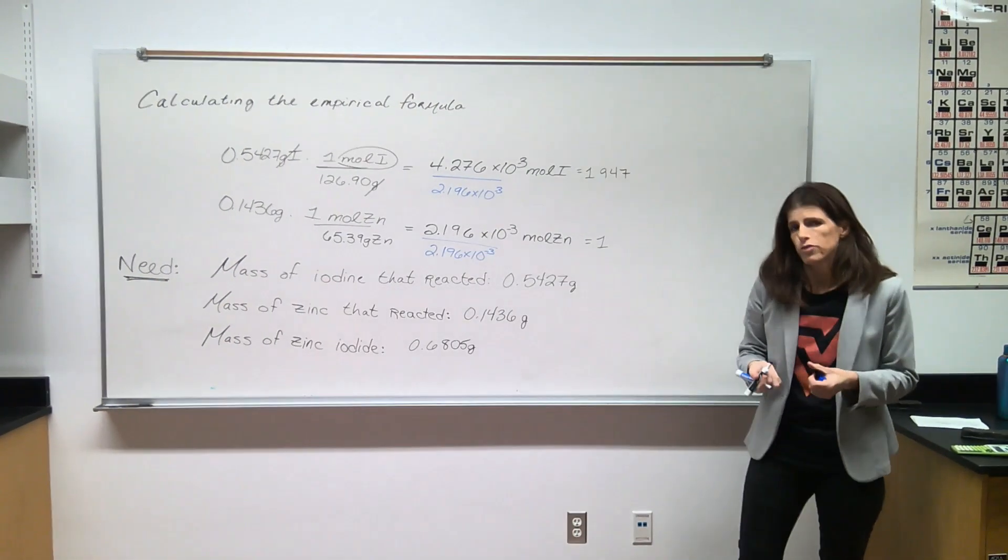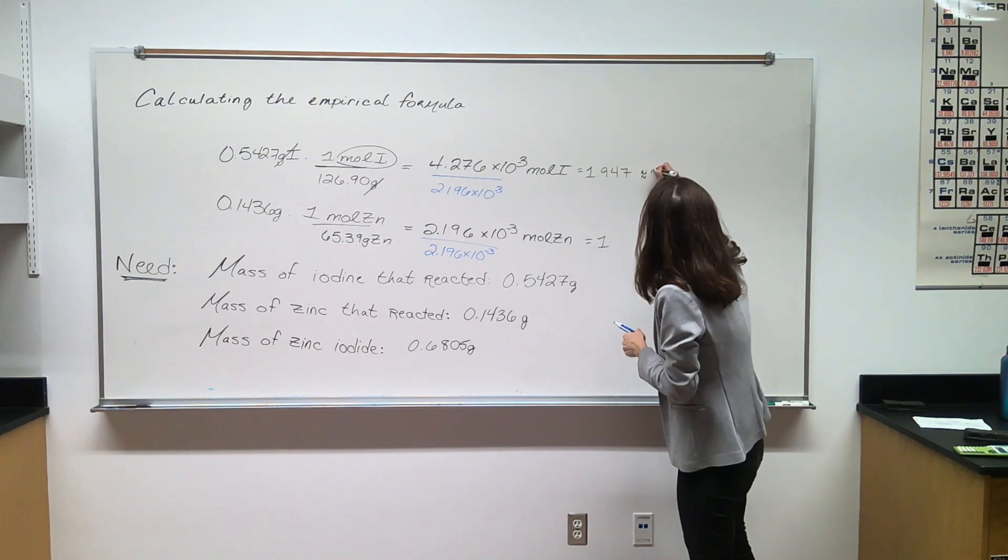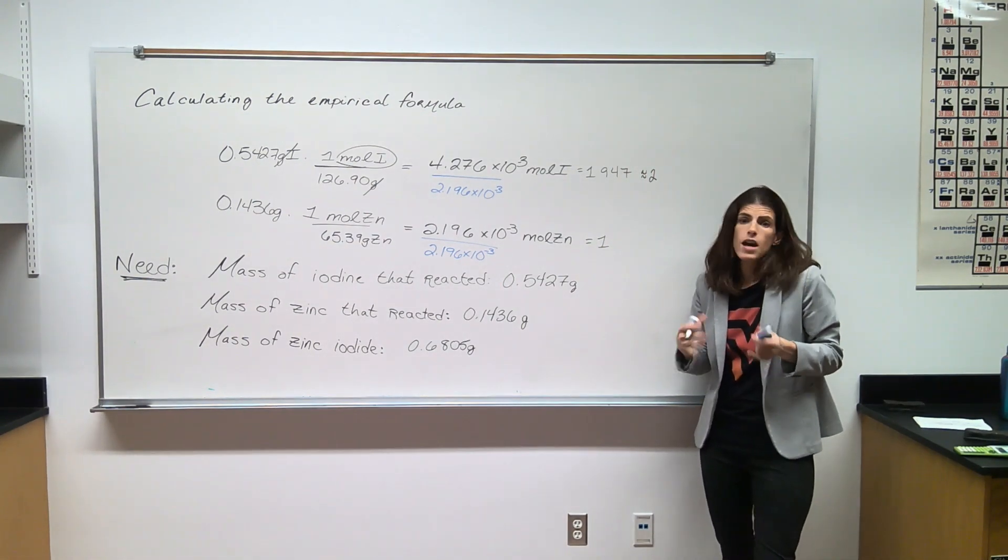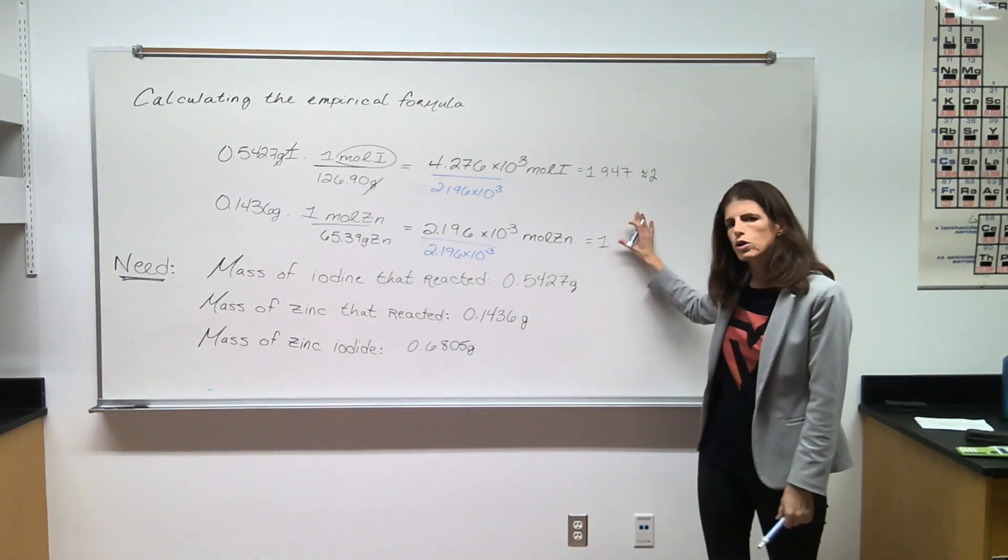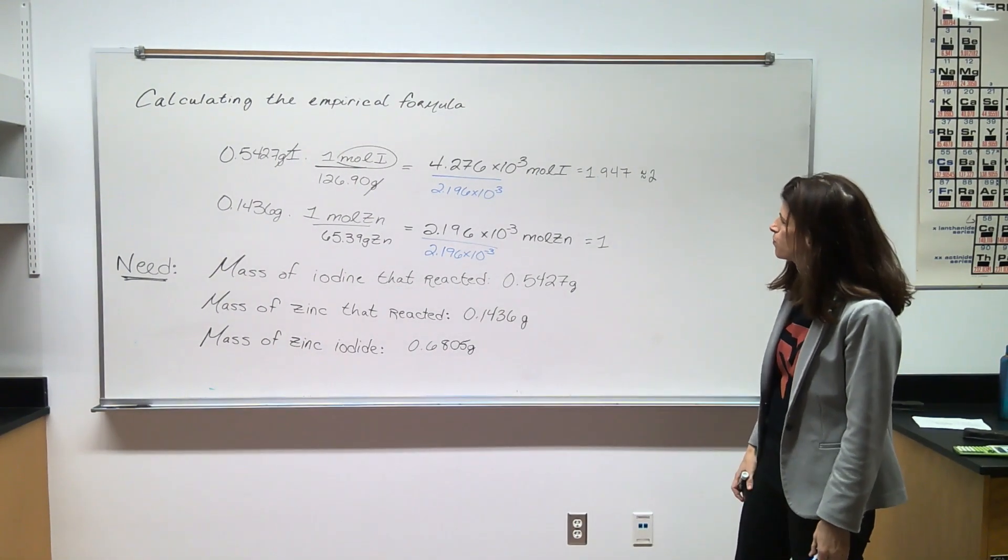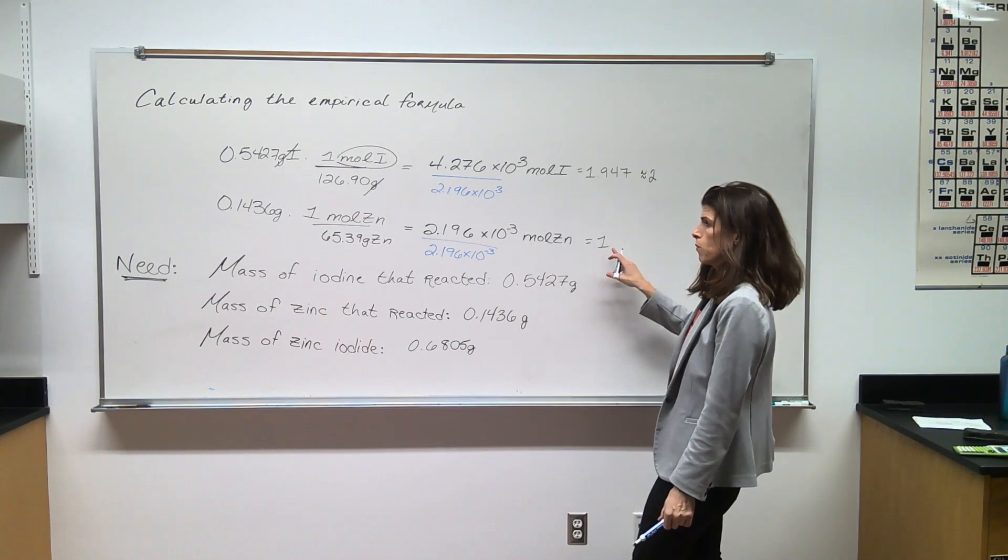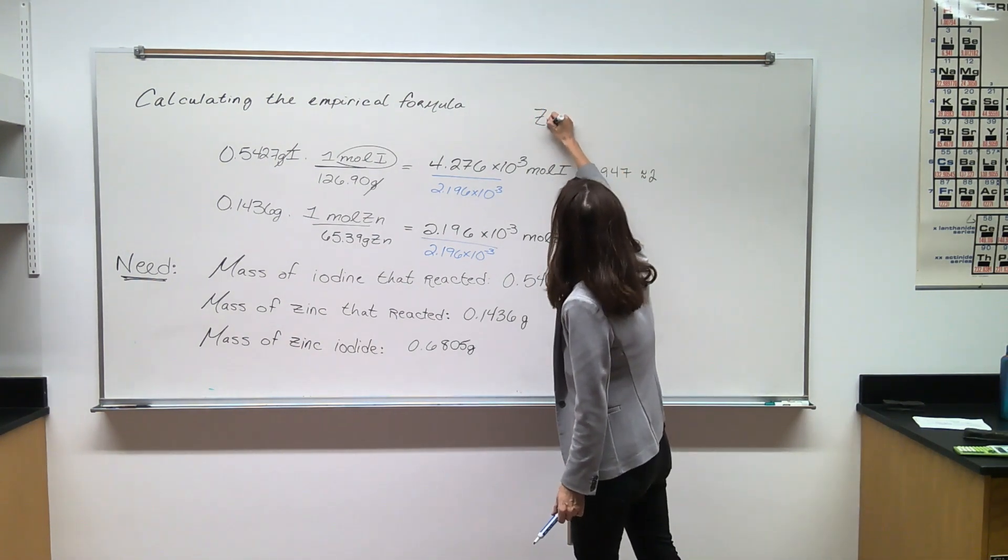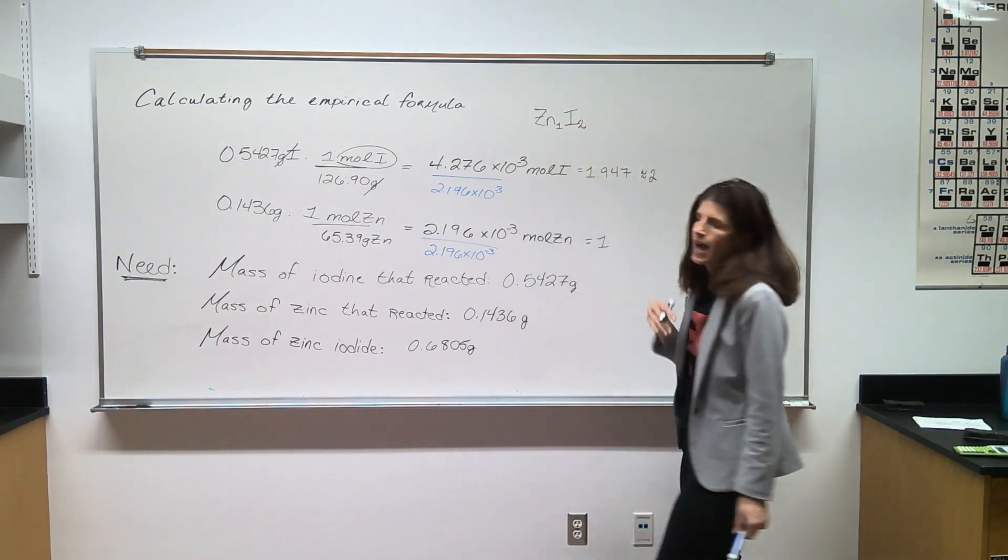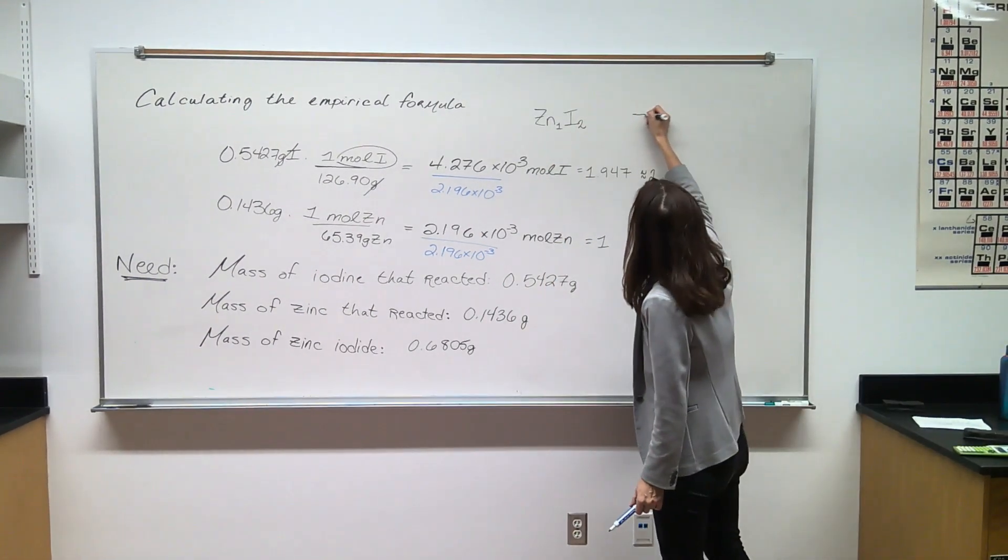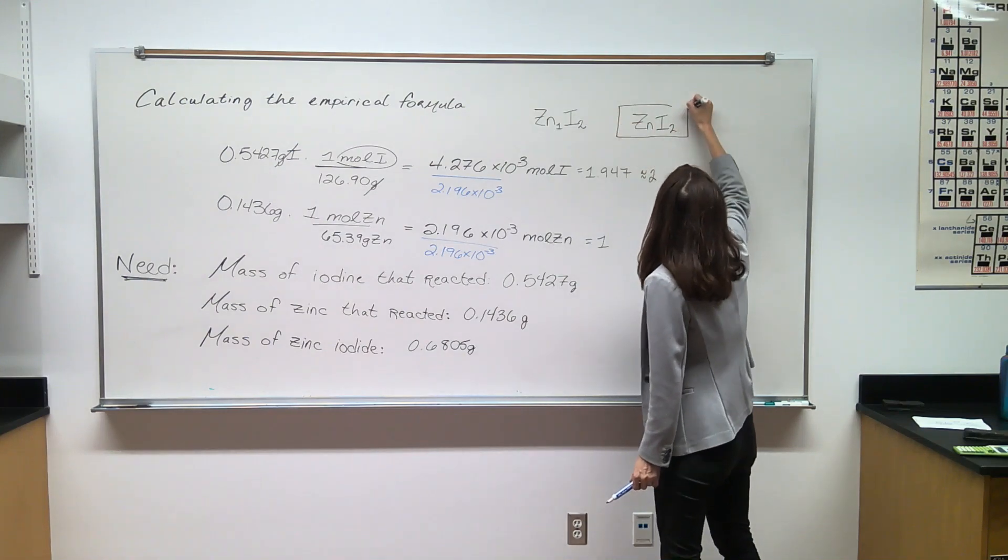A formula is a whole number ratio, and since this is so close to 2, I feel comfortable rounding it up to 2. That might not work out in every single case. If you get a value like 1.5, then you have to double all of your mole values. However, we're close enough to 2 here so we can round up to 2. What do we do with these values? Because we know that we have 1 here, we know that we have 1 mole of zinc for every 2 moles of iodine. So we have this formula. The 1 is understood, so I don't really need to write anything. Instead, I'll write ZnI2. That'll be my answer.